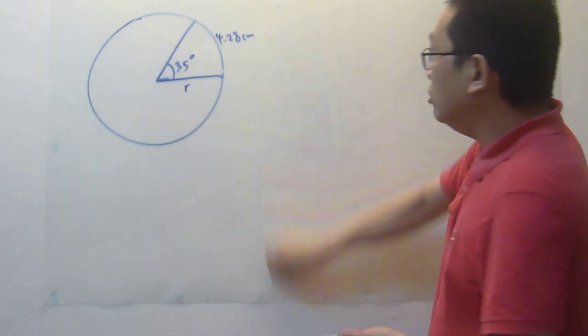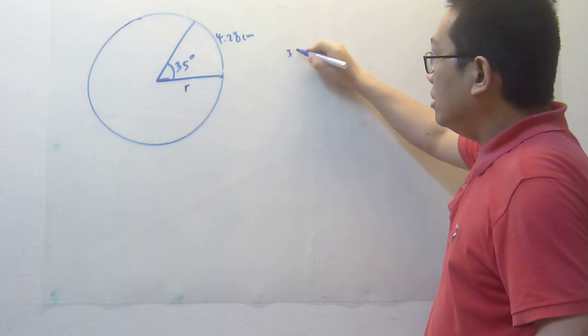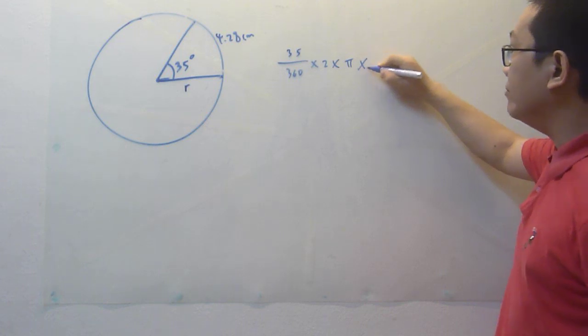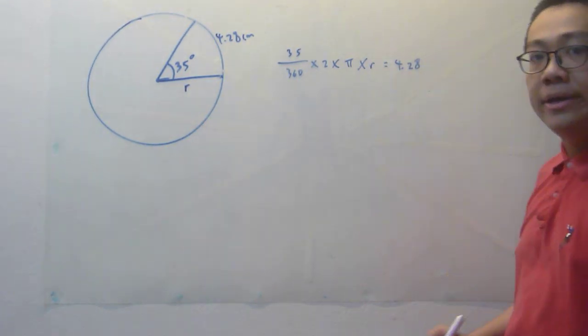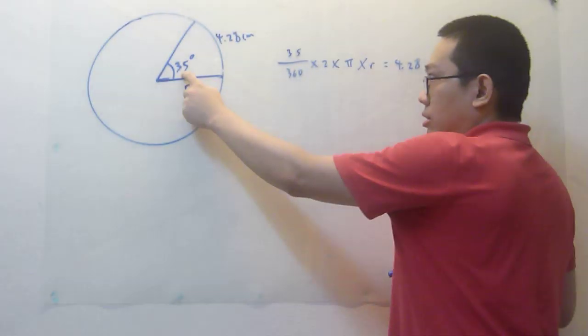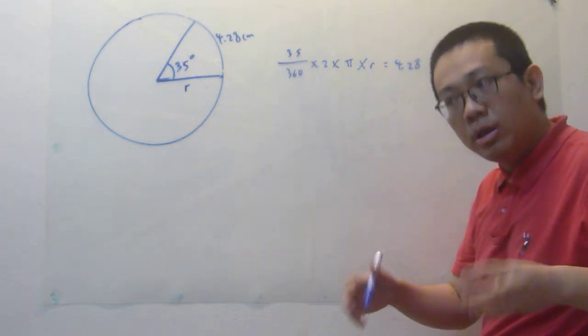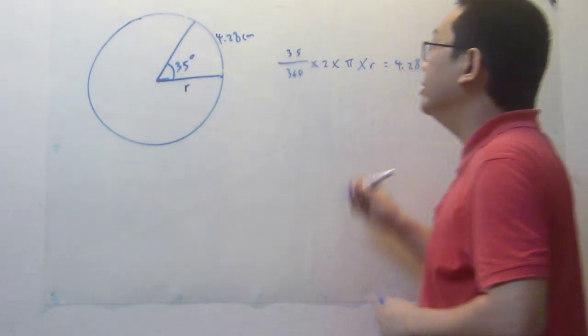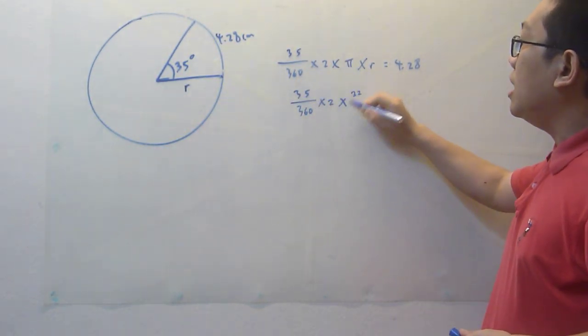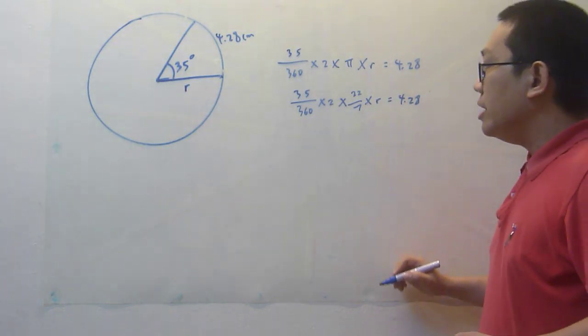So as usual, since we need to find the radius, then we have to use algebra: 35 over 360 times 2 times π times r equals 4.28. Because 4.28 comes from the angle over 360 times 2πr for me to get the 4.28. So now I need to do it backward. So 35 over 360 times 2 times π times the radius equals 4.28.